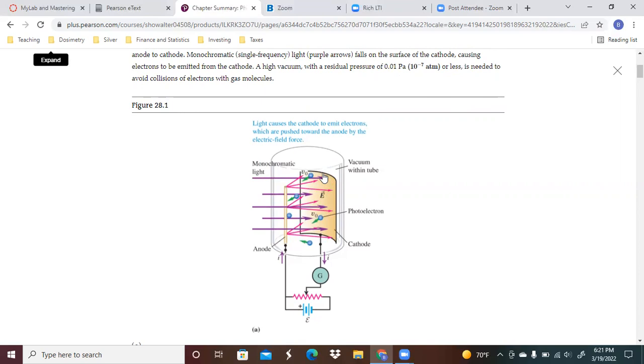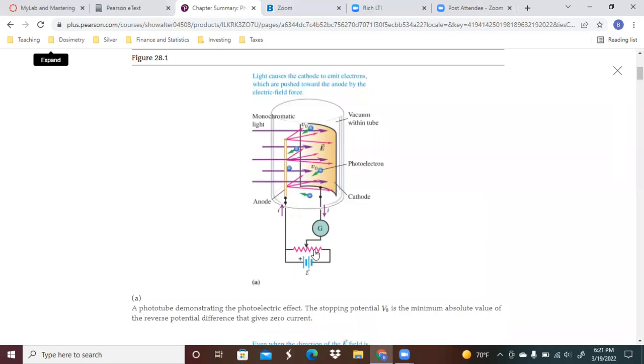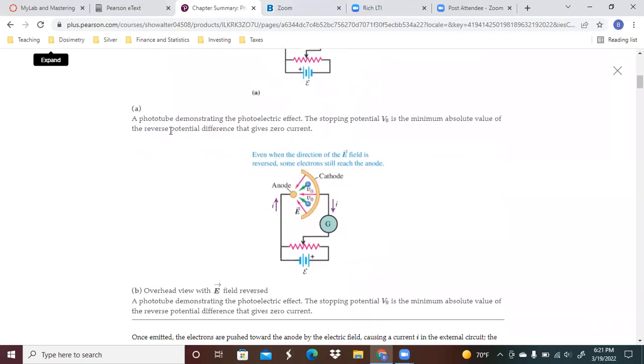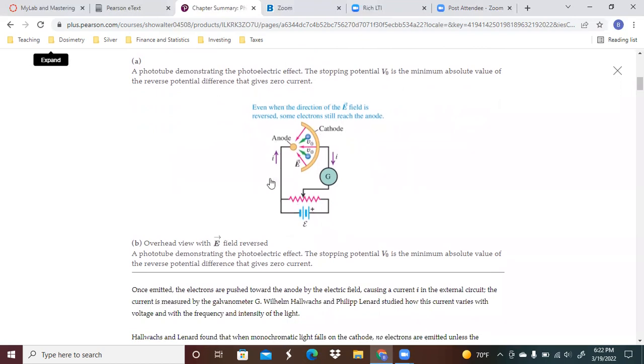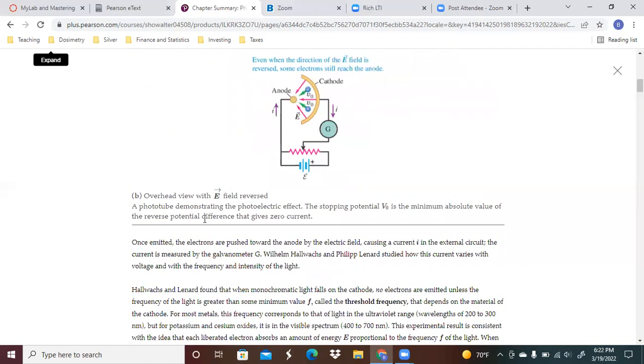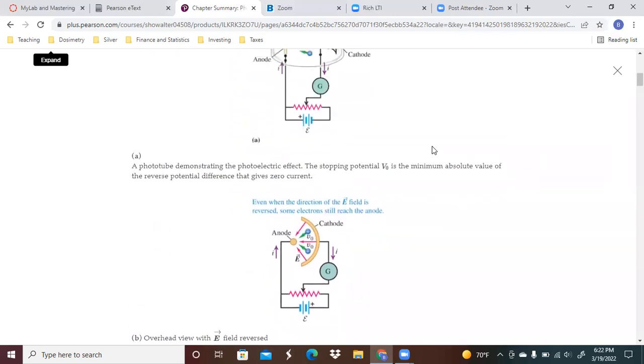Monochromatic light comes in and strikes the cathode. The electrons are pushed towards the electric field or towards the anode by the electric field force. Light comes in, the electrons are liberated, and because there's an electric field pushing them towards the anode, that's what you see. When that happens, current is created. The photo tube has a stopping potential V0, and that's the minimum absolute value of the reverse potential difference that gives zero current. There's some potential difference that you can apply to be able to stop the current.